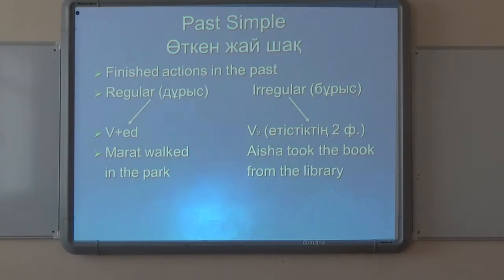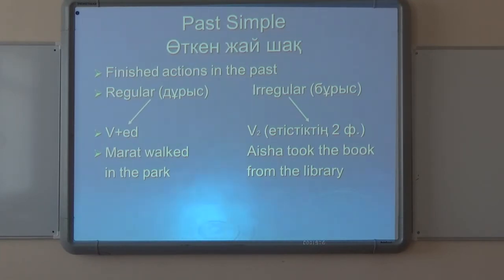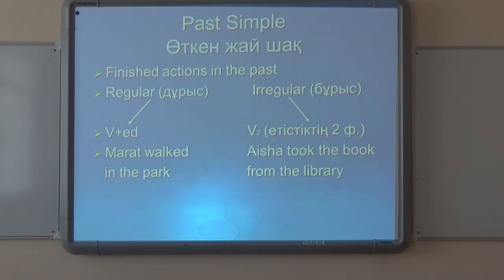Regular verbs take the ending -ed. For example, the sentence: 'Marat walked in the park.' Here 'walked' is the regular verb and we add the ending -ed. For irregular verbs, there is a table which shows the three forms. We use the second form in this tense. For example: 'Aisha took the book from the library.' The verb is 'took,' which is the second form of 'take.'